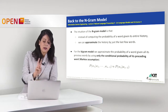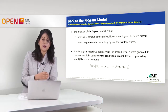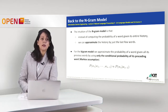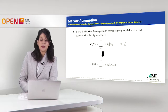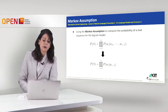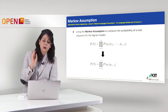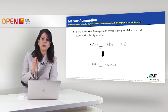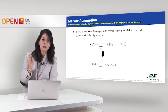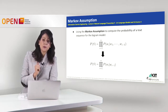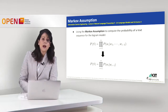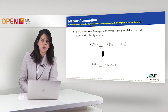The Markov assumption says that instead of computing the probability of a word given all the preceding words, we do it given only the last word before it. Using the Markov assumption to compute the probability of a text sequence for a bigram model, we transform from the probability of the whole sequence — where for word w_i we consider all previous words w_1 to w_{i-1} — to computing the probability of w_i by considering only the occurrence of the word w_{i-1}.